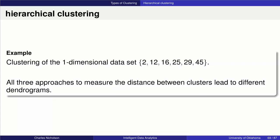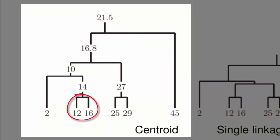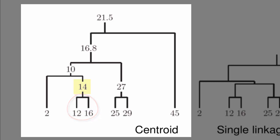If you have the values 2, 12, 16, 25, 29, and 45, different approaches to measuring distance between clusters will lead to different dendrograms. Using the centroid method, we take 12 and 16 and combine them because they're the closest pair. Similarly, 25 and 29 are also a closest pair. We calculate their centroid — the centroid of the cluster {12, 16} is 14 — then compare 14 with all other objects to find which is closest.